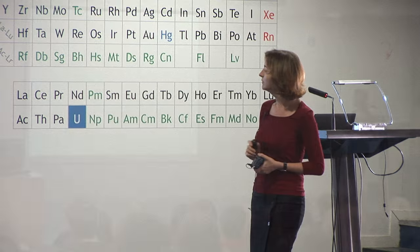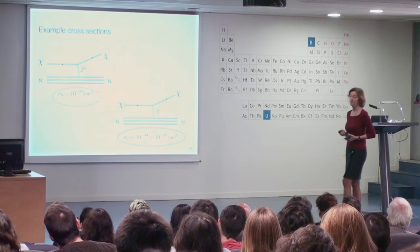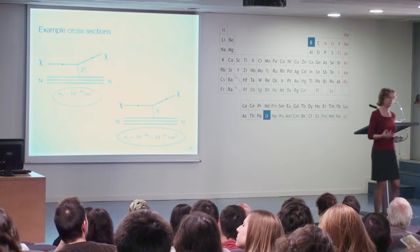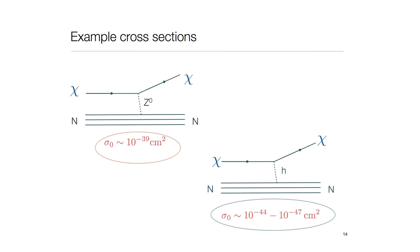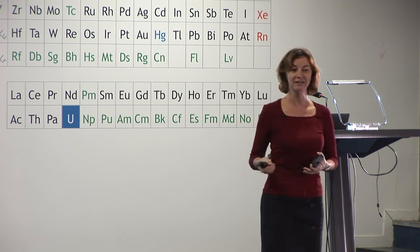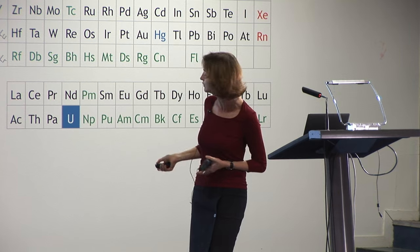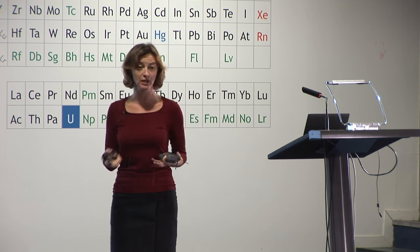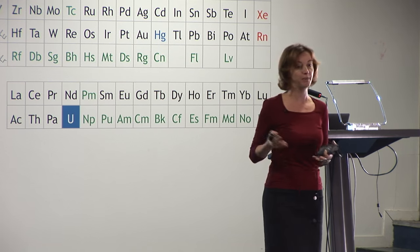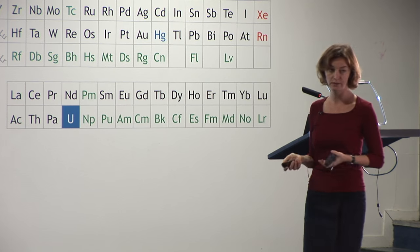As an example: if such a particle simply interacts via Z-boson exchange, you can immediately calculate a cross-section of around 10^-39 square centimeters — something direct detection experiments have excluded for many years. On the other hand, for something like Higgs exchange — and there are now many Higgs portal dark matter models — the predicted cross-sections are in the range 10^-44 to 10^-47 square centimeters. This is actually good news, because this is the range that can be covered by experiments that are either already operating or will soon operate.